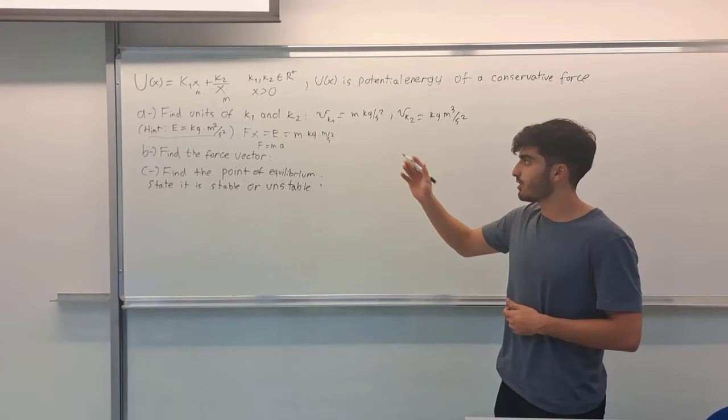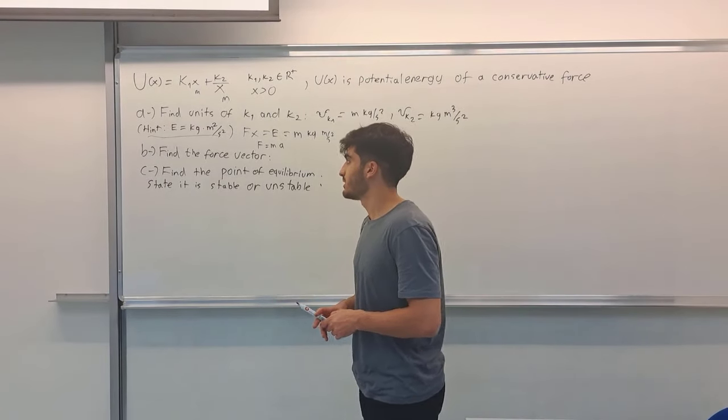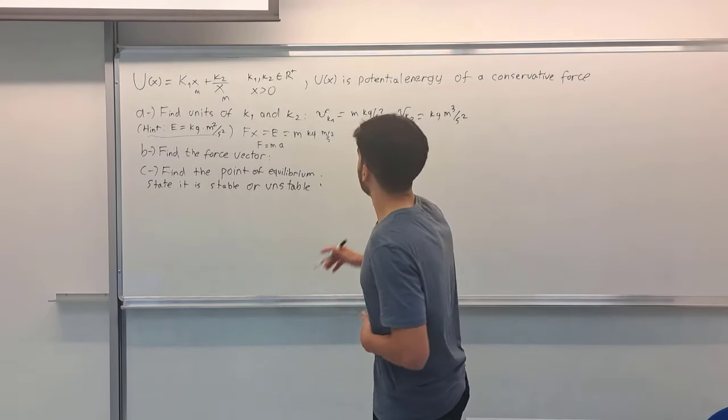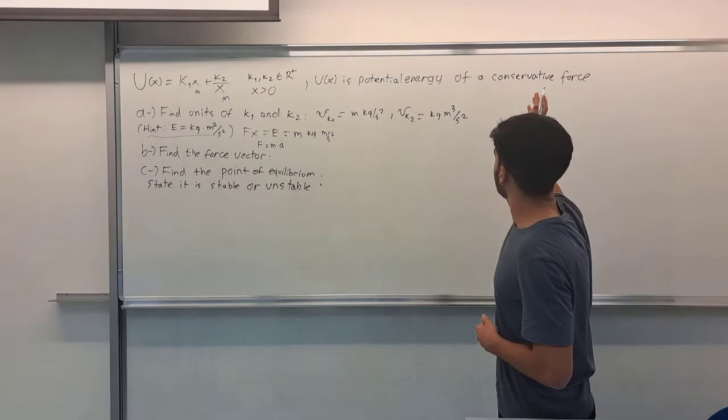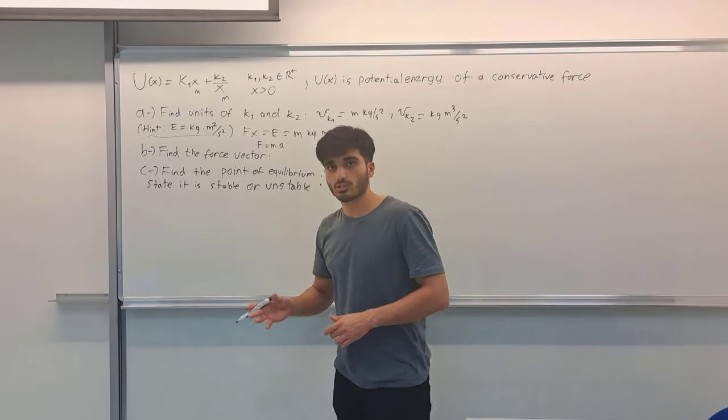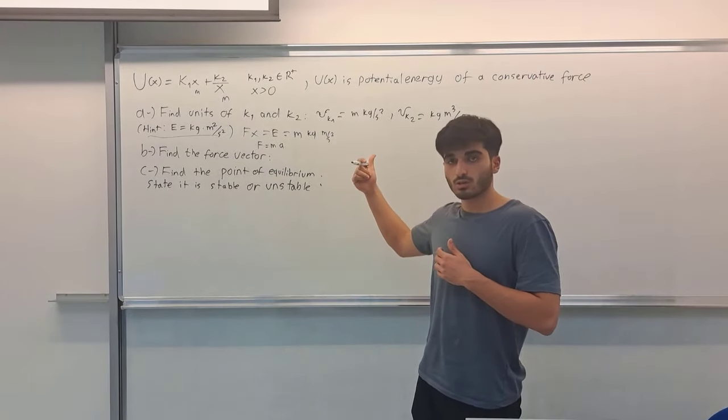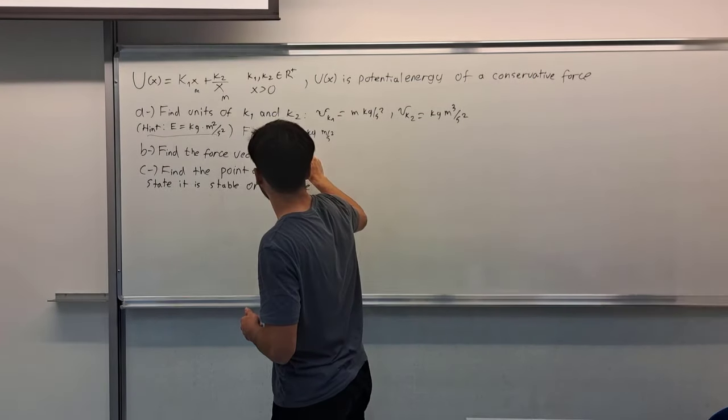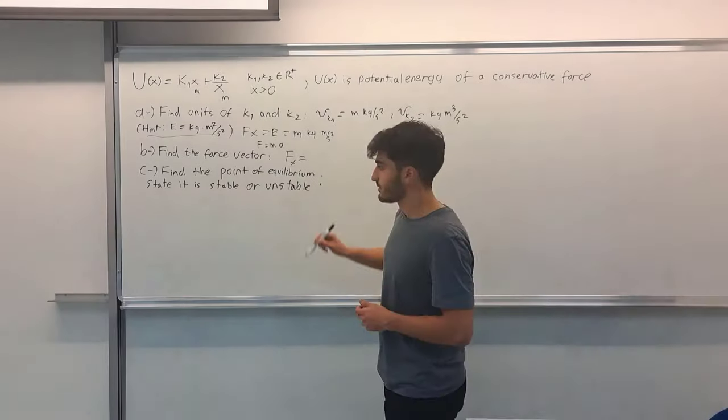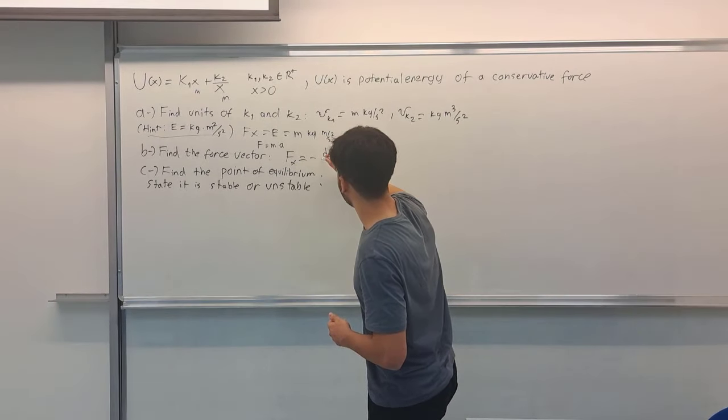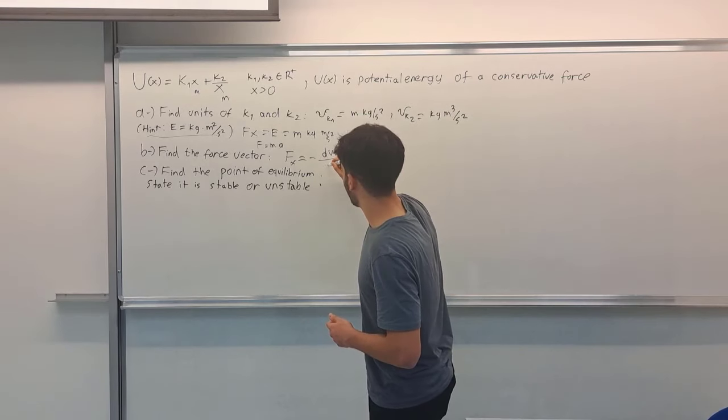Now we can go to the B question. Find the force vector, it says. U(x) is a potential energy of a conservative force, so therefore this potential energy is caused by a conservative force and they are related like that: Fx equals minus derivative of potential energy function U(x) over dx.